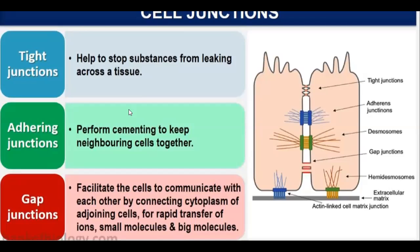Adhering junctions work like cement between two cells — they perform cementing to keep neighboring cells together. Gap junctions facilitate communication between cells by connecting the cytoplasm of adjoining cells, allowing rapid transfer of ions and small molecules.